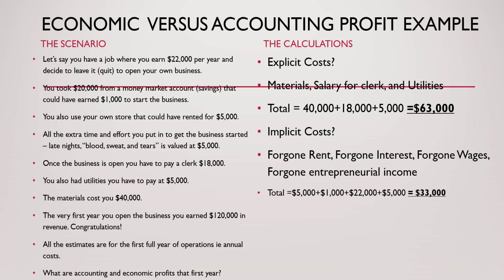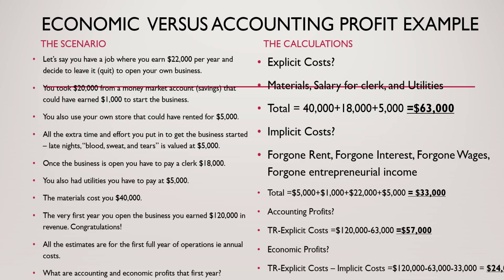Put the implicit costs all together: foregone rent, the interest, the wages, and the extra entrepreneurial income. So, accounting profits equal total revenue minus explicit costs only — that gives you $57,000. Economic profits equal total revenue minus explicit costs minus implicit costs — doing all of this gives you $24,000. Remember: find explicit costs, find implicit costs. Revenue minus explicit is accounting profit. Revenue minus explicit and implicit is economic profit.